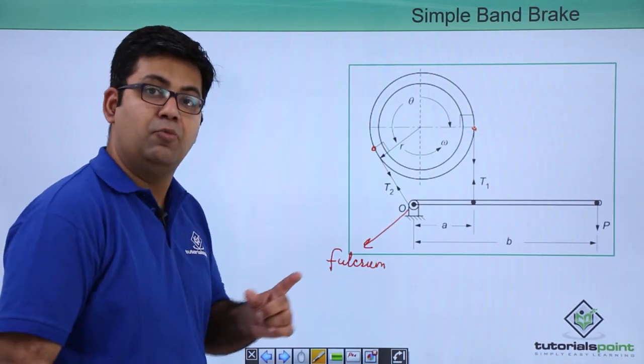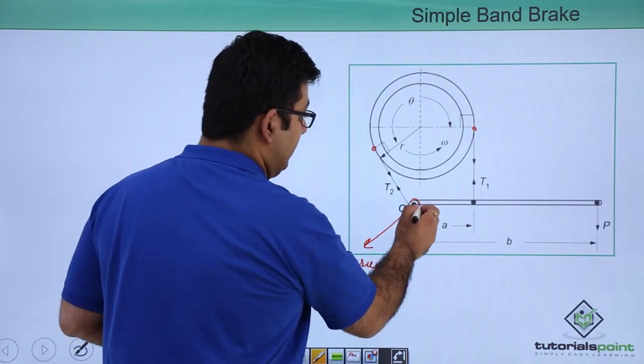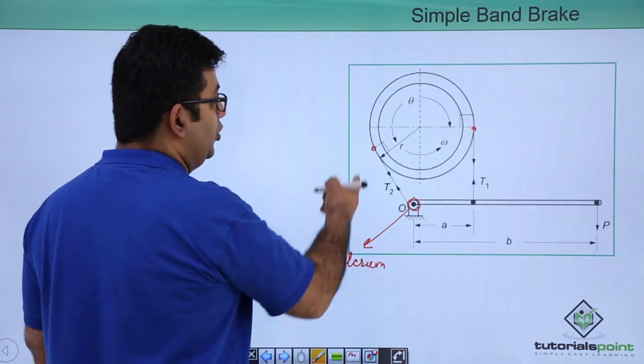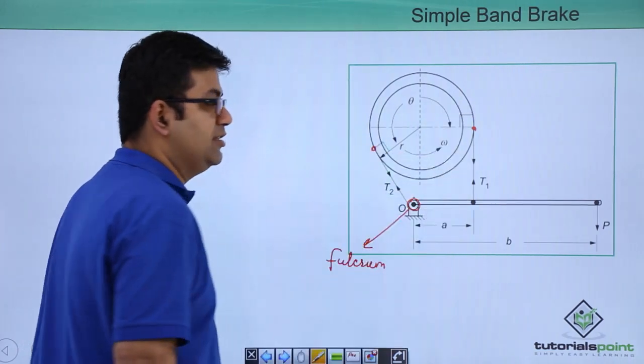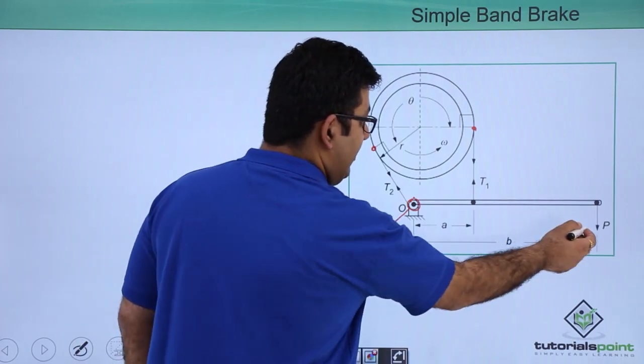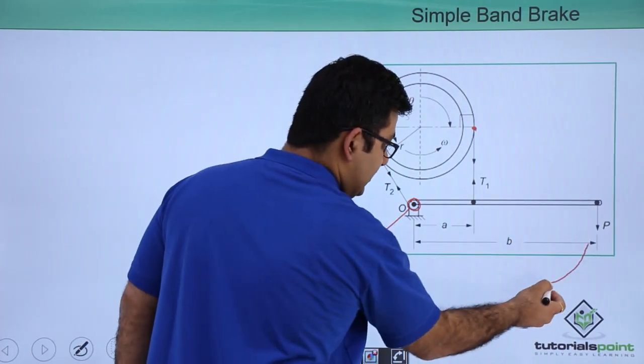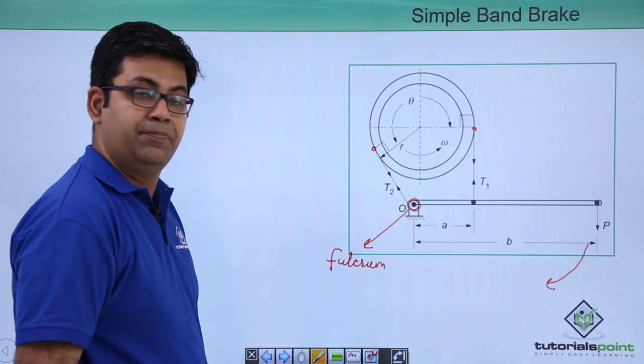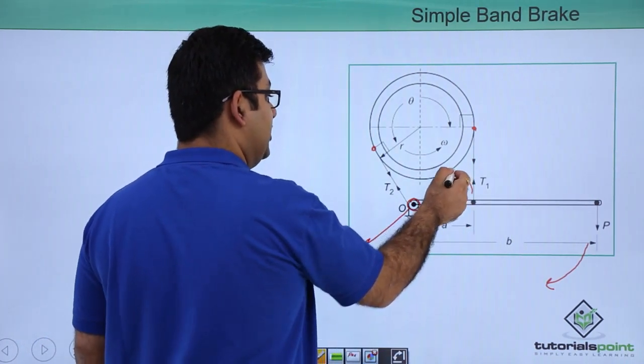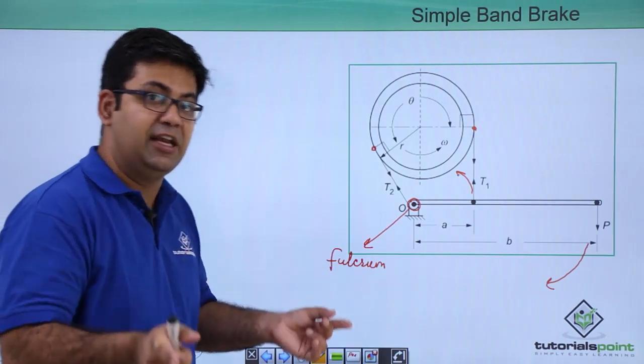So if you take the moments about this fulcrum, right now the motion is in anti-clockwise direction. So you will take moments about this fulcrum, you will have P into B, that's a moment like this, is equal to T1 into A, that's a moment like this. So both the moments are cancelling each other.